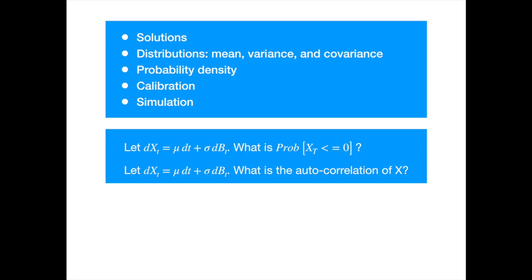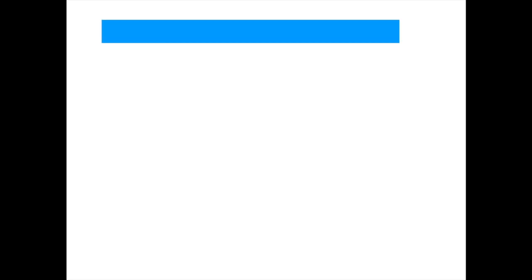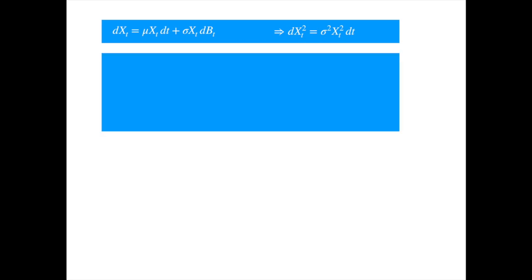Let's start with the geometric Brownian now. Recall that the SDE of the geometric Brownian motion is as follows. It is similar to the arithmetic Brownian, but the drift and diffusion are now proportional to the value of the process. That complicates things a bit. In the arithmetic Brownian, the variables were nicely separated, so we could just integrate. Here we will need to use a slightly different approach.